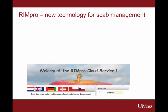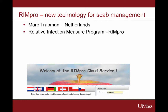Hi, this is Dan Cooley. John Clements and I have been working at the University of Massachusetts on decision support systems to manage diseases and other pests. One of the things that we're really excited about these days is a new scab management tool called RIMPRO. It was developed in the Netherlands by a long-time crop consultant, Mark Trapman, and the whole name is an acronym for Relative Infection Measure Program. The infection it's measuring is apple scab.